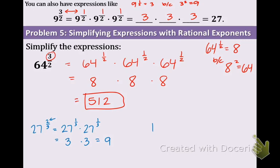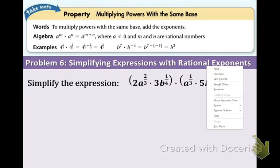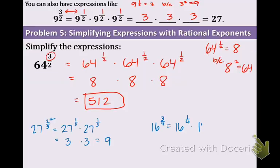One other short example, 16 to the 3 fourths. You can rewrite that as 16 to the 1 fourth times itself. 16 to the 1 fourth, the fourth root or 16 to the 1 fourth is 2 because 2 to the fourth equals 16. So that means we have 2 times 2 times 2 and that equals 8.